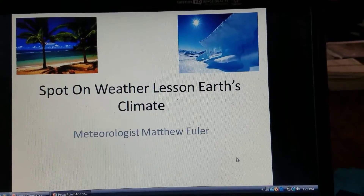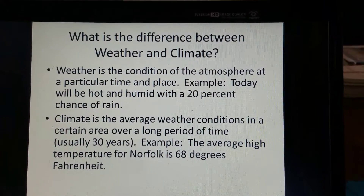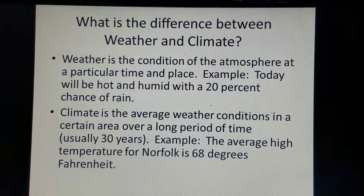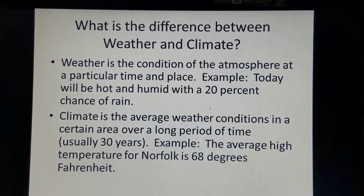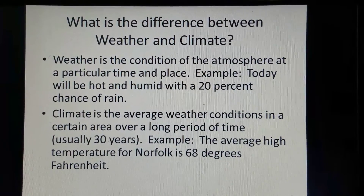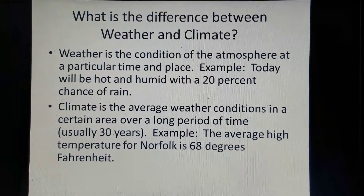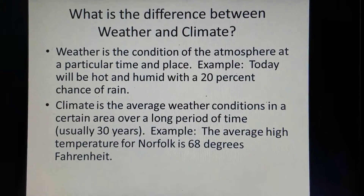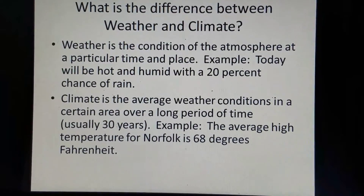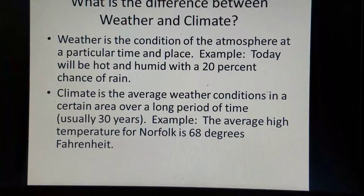We're going to start off with: what's the difference between weather and climate? Weather is the condition of the atmosphere at a particular time and place. For example, if I made a statement saying today is going to be hot and humid with a 20% chance of rain, that's pretty much stating what the weather is going to be like — or is the weather going to be windy today, or it's going to be cold. That's the state of the atmosphere at a particular time and place.